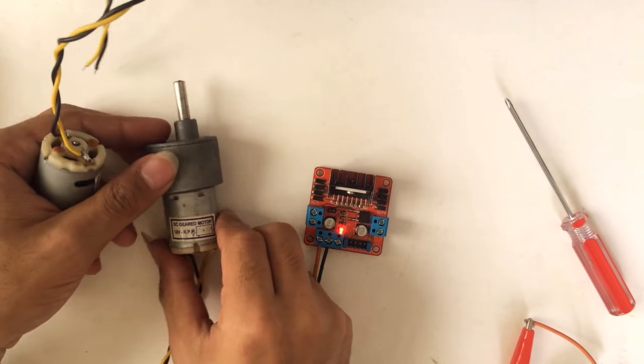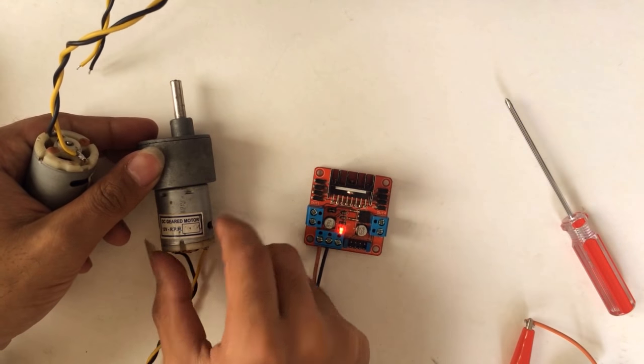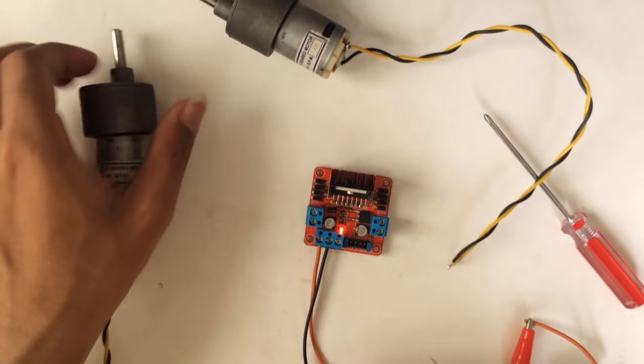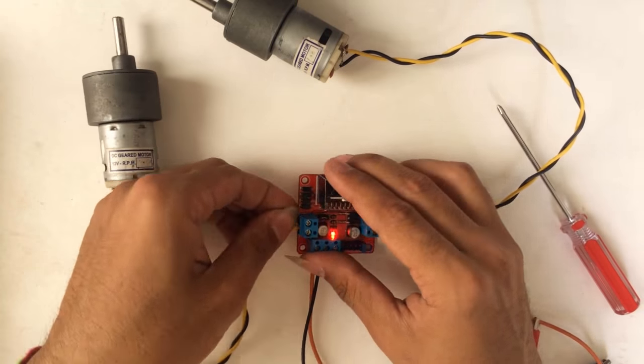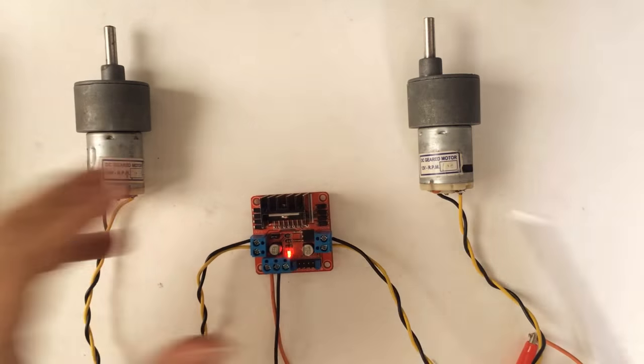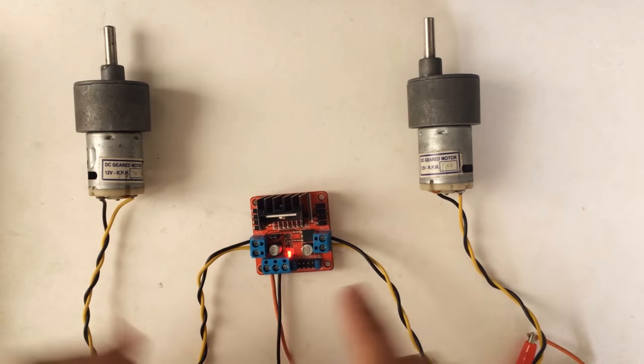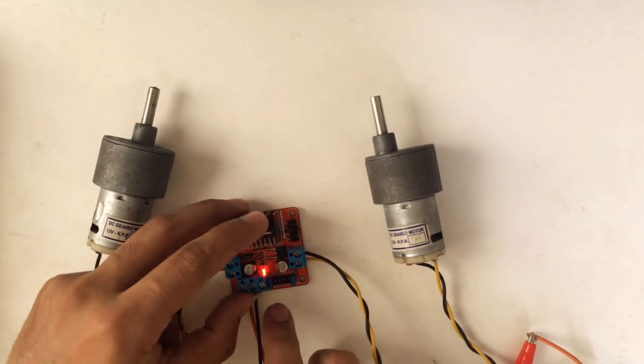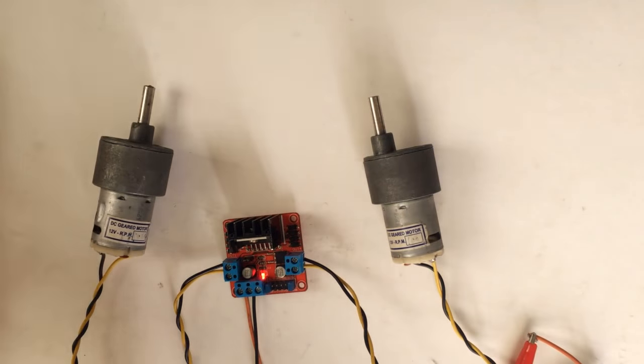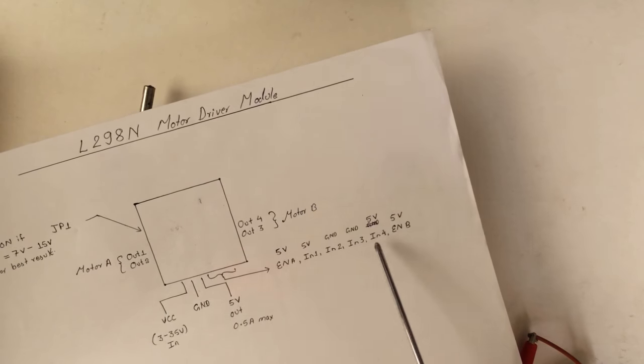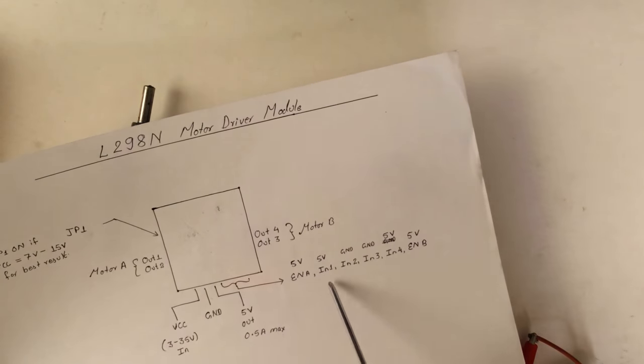Now let's connect the motors. Here we have DC geared motor 12 volt 100 RPM, two of these. We'll connect both, one in each side. Since we have powered this device, none of our motors are rotating. To rotate our motor we need to insert or provide IN1, IN2, IN3, IN4 respectively.